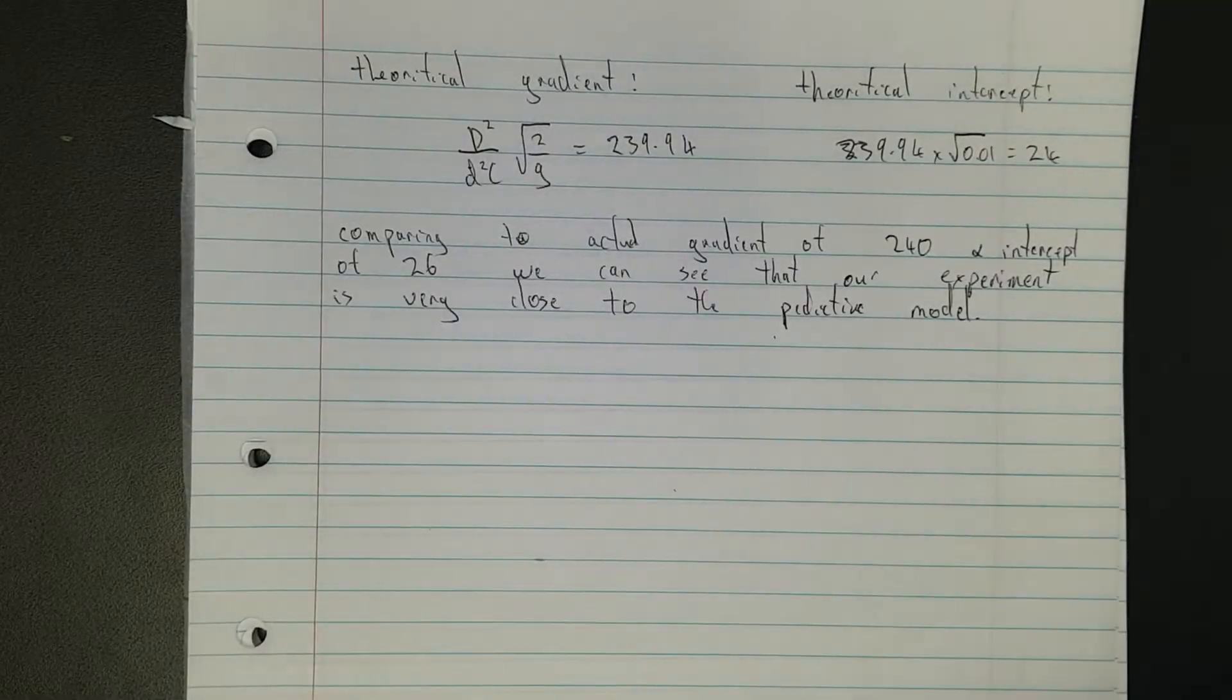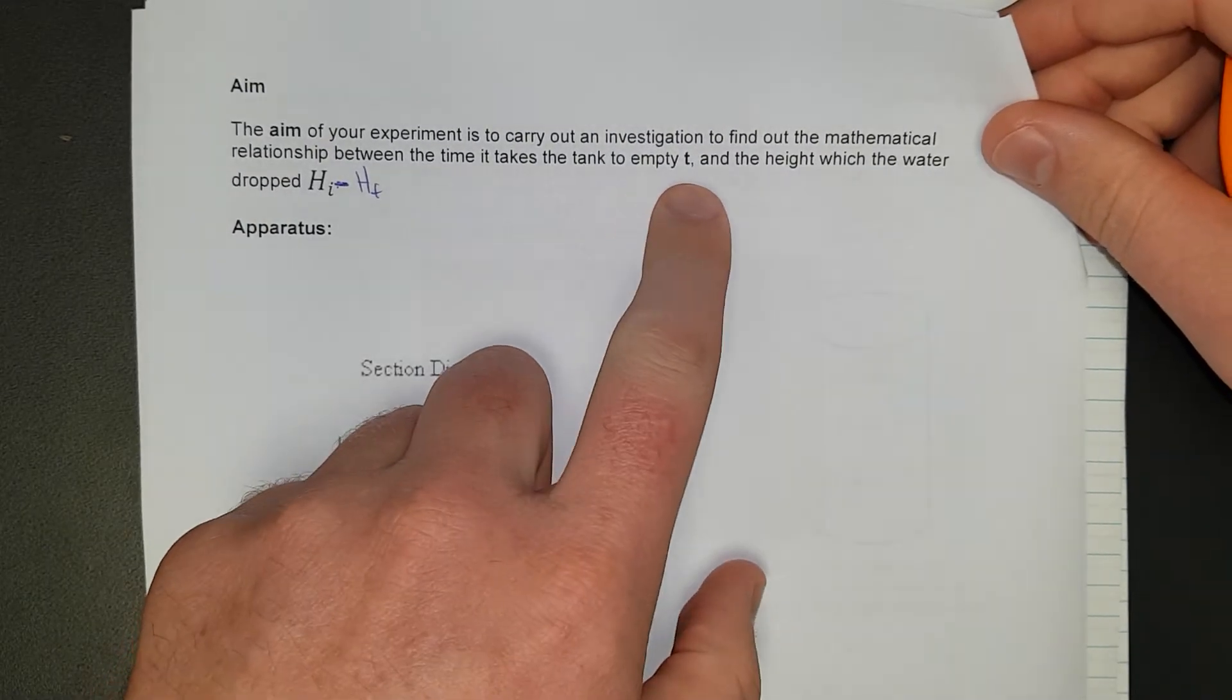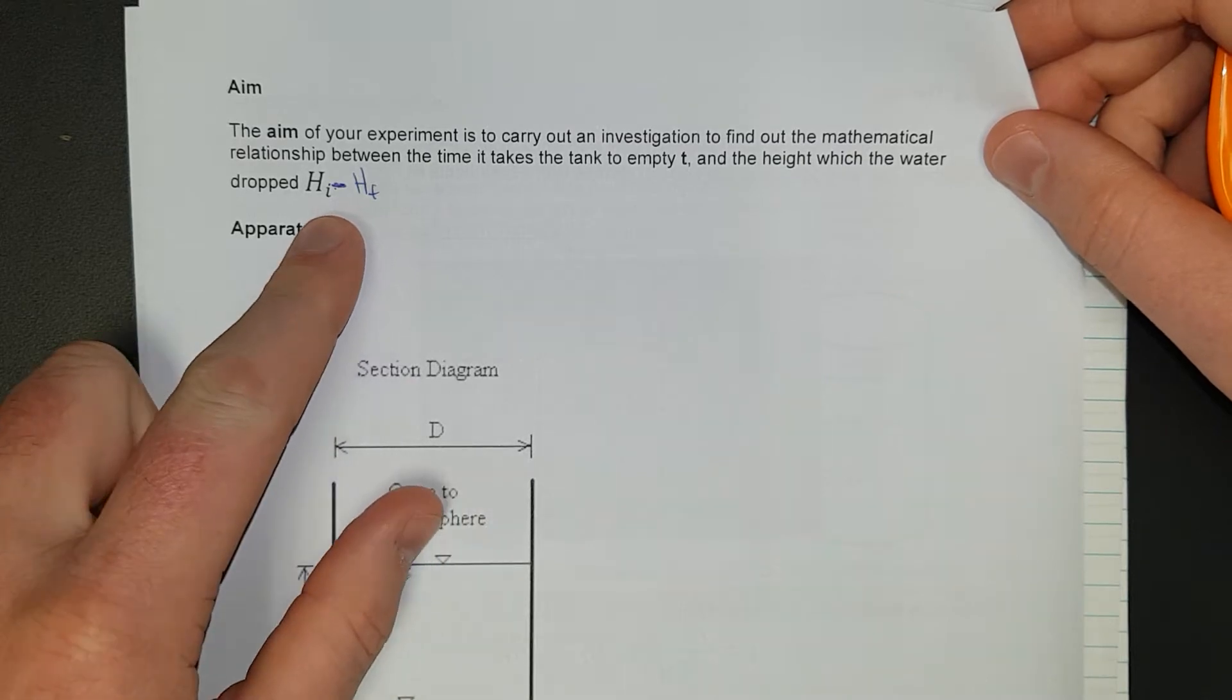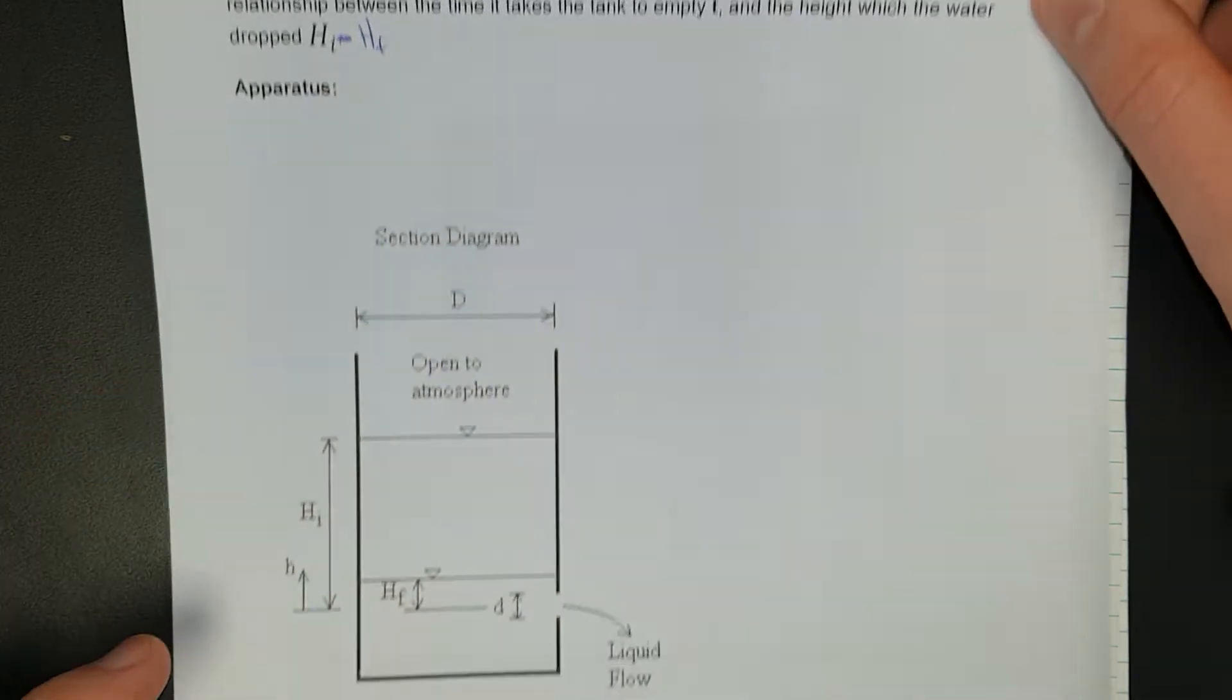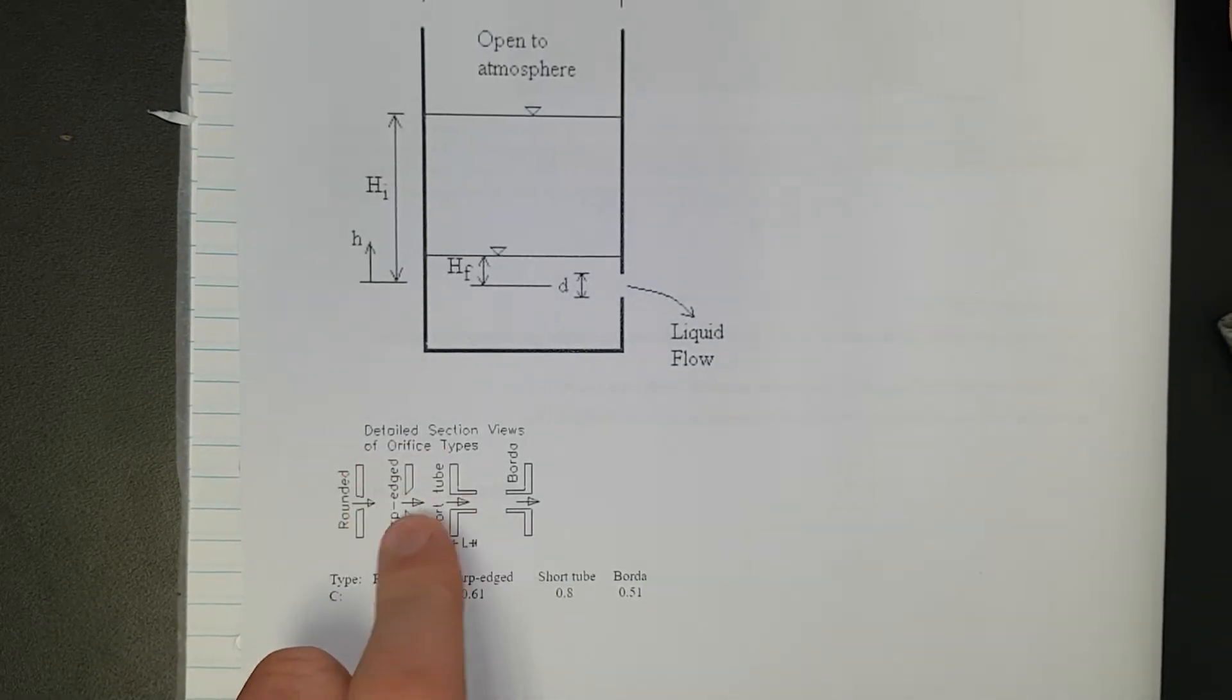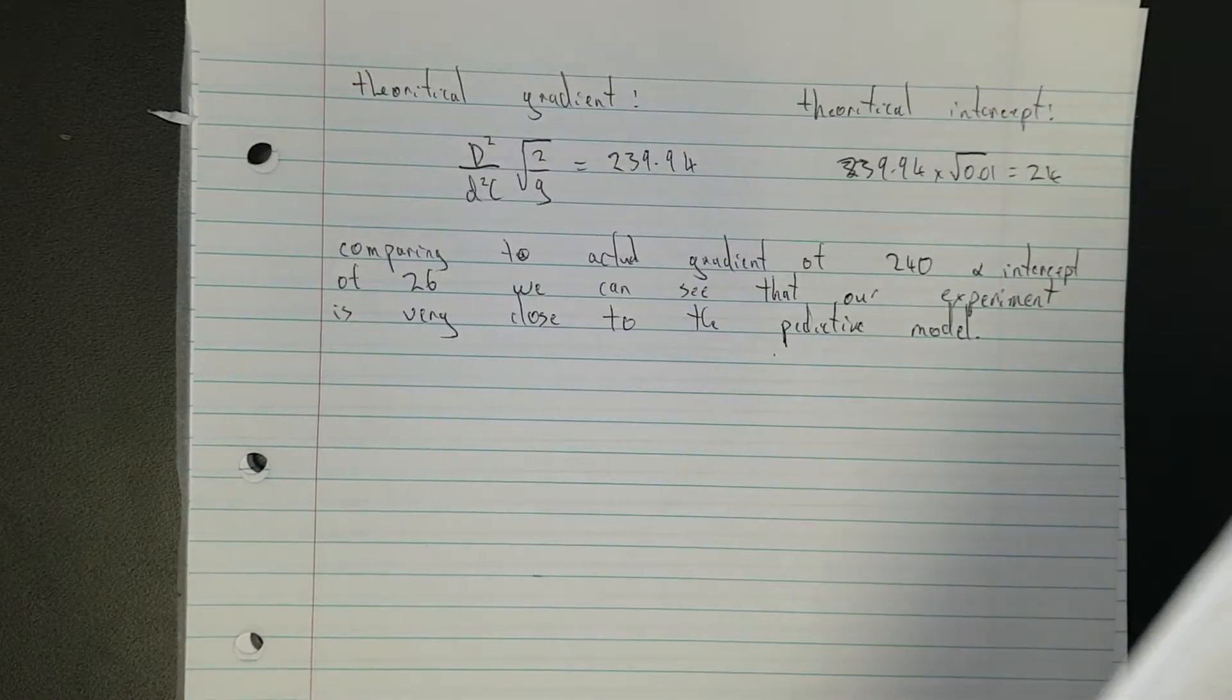On the next page we have the aim: find the relationship between the time it takes the tank to empty and the height dropped, which is just the initial minus the final which will give you the distance. And here's the different types of orifices or just holes in the bottle or the tank.